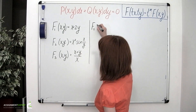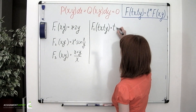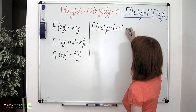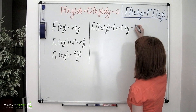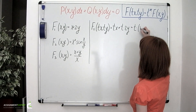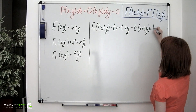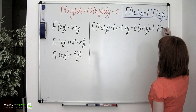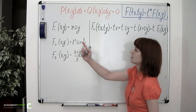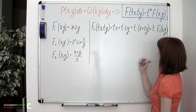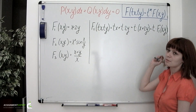So f1 of tx and ty equals tx plus t times ty. Obviously, t can be factored out, so we'll have t multiplied by x plus ty, or t multiplied by f1 of x and y, because what we have in the brackets is nothing else than the initial function. t here is taken to the first power, so this function is homogeneous of the first degree.